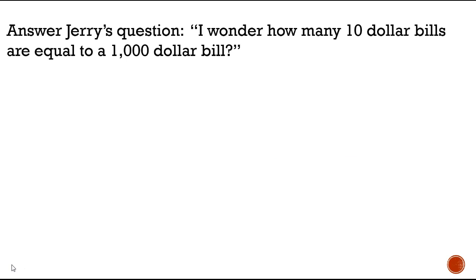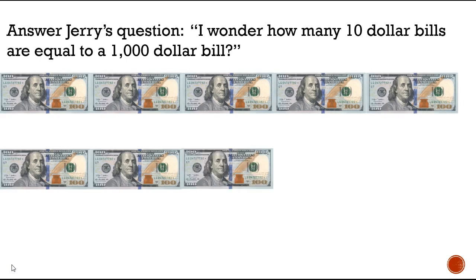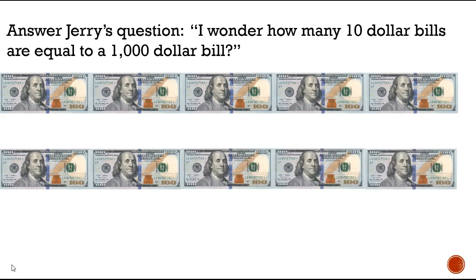Now counting by 100s — let's figure out how many $100 bills are in a thousand: 100, 200, 300, 400, 500, 600, 700, 800, 900, 1,000. So there are 10 hundred-dollar bills in a thousand.